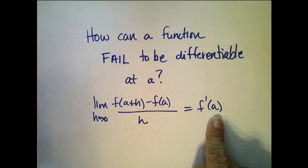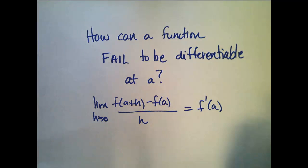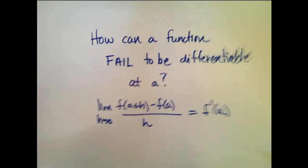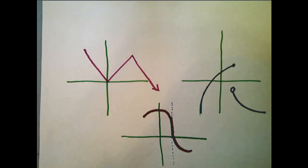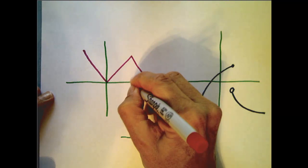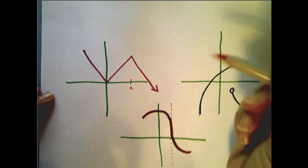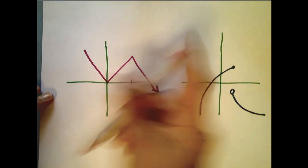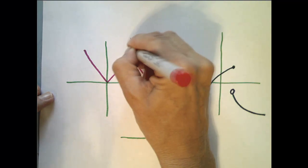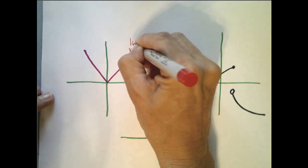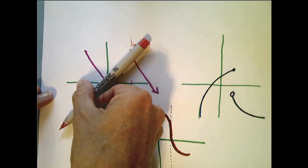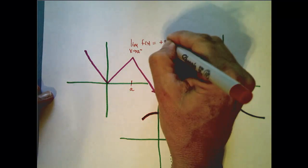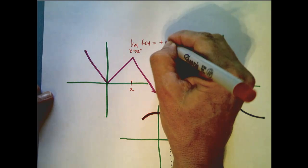So the question is, when is it that this limit doesn't exist? Let's look at this question graphically. Alright, let's look at this point right here. We'll say this is our a value from previous videos, and the limit as x approaches a from the left of this function is equal to some positive number.